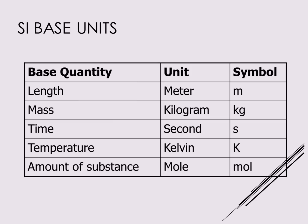Whenever we're measuring length we always use the base unit of meters — we'll talk about how we modify that with prefixes in just a minute. We also see mass, and notice that the base unit for mass is actually kilogram, not gram. Time is measured in seconds. Temperature is in units of Kelvin, where absolute zero is in fact zero — there is no negative Kelvin, and notice it's not degrees Kelvin, just Kelvin. The amount of substance is measured in moles.